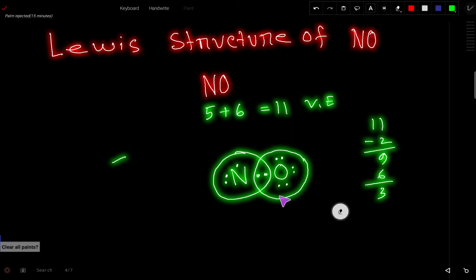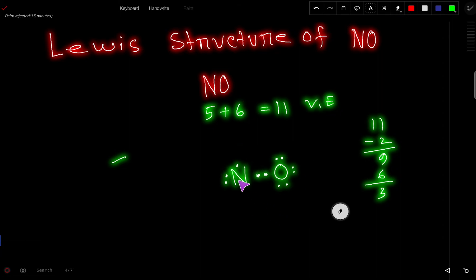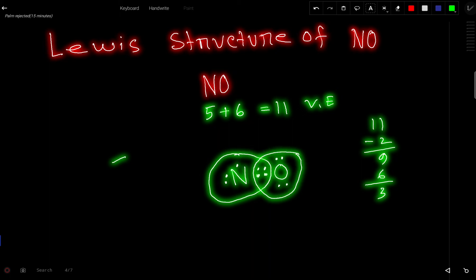We need to satisfy the octet for this central atom. So to do so, I will move a lone pair as a bond pair. So let us move that. Now this nitrogen has seven valence electrons and this oxygen has eight valence electrons.